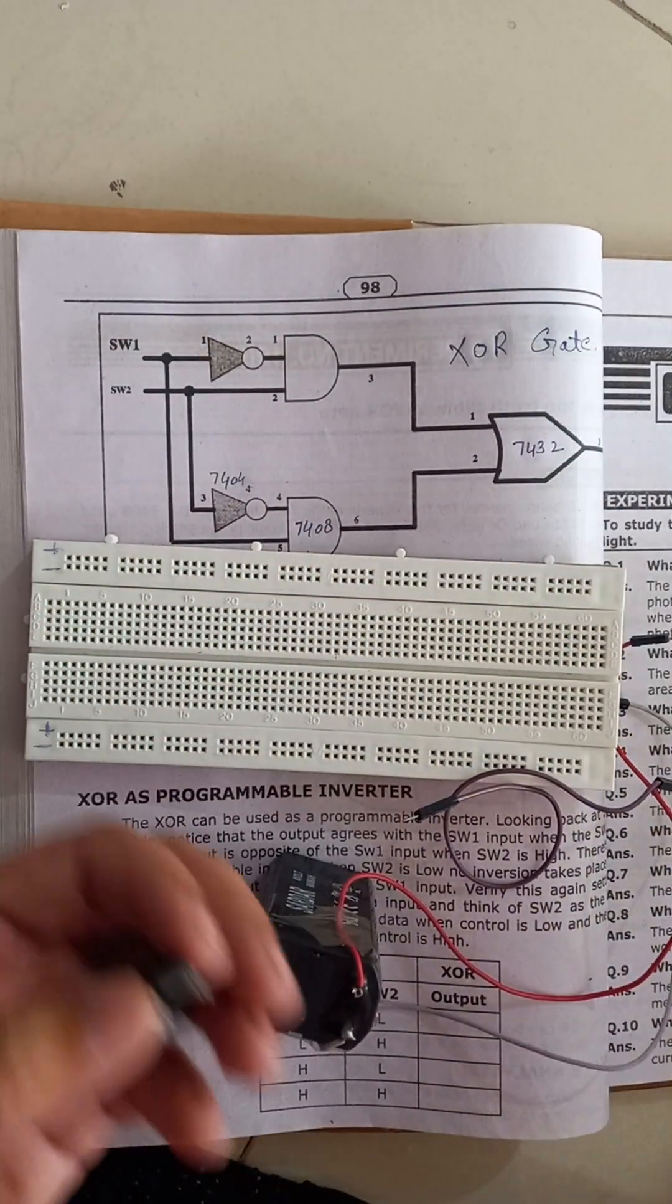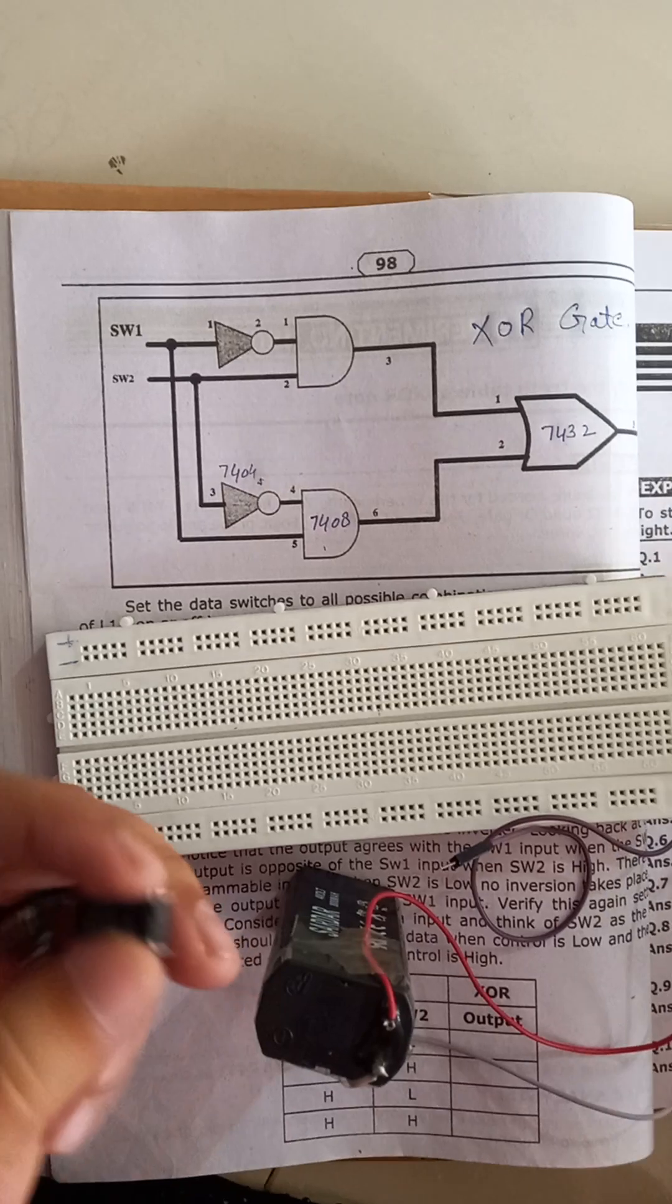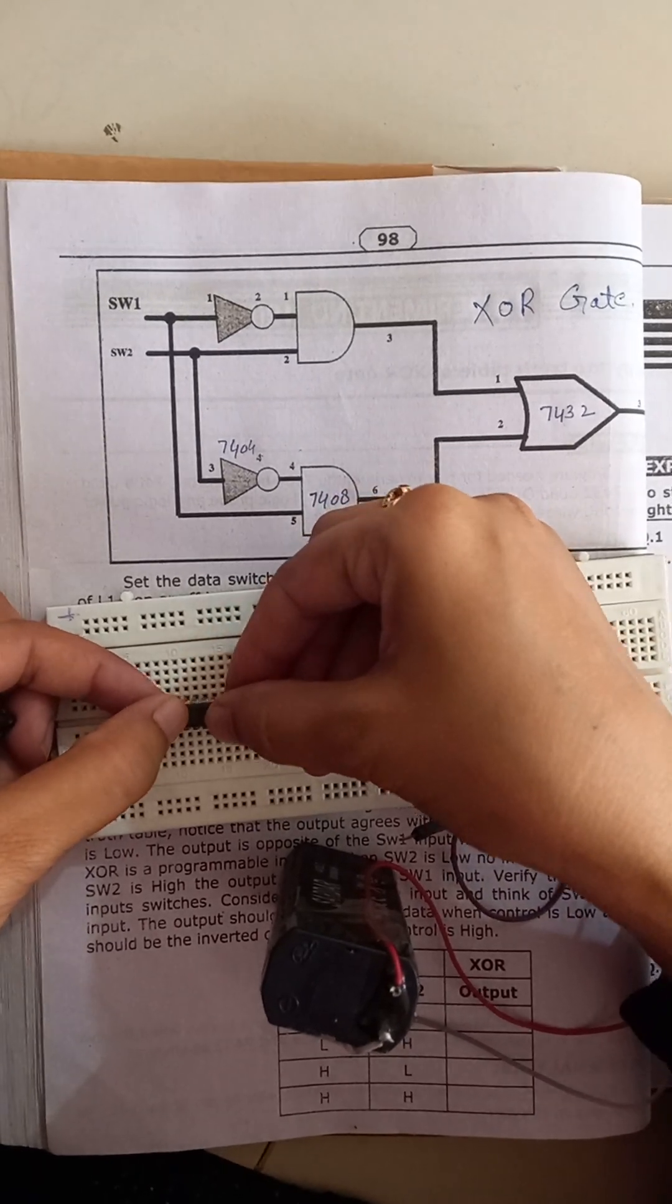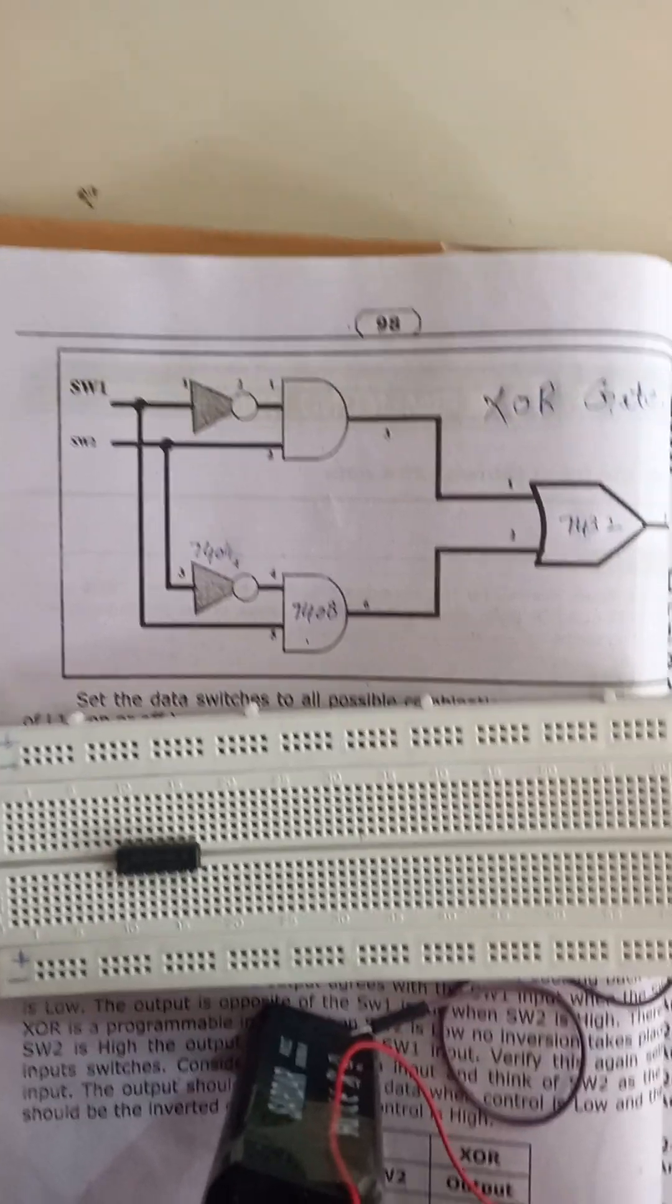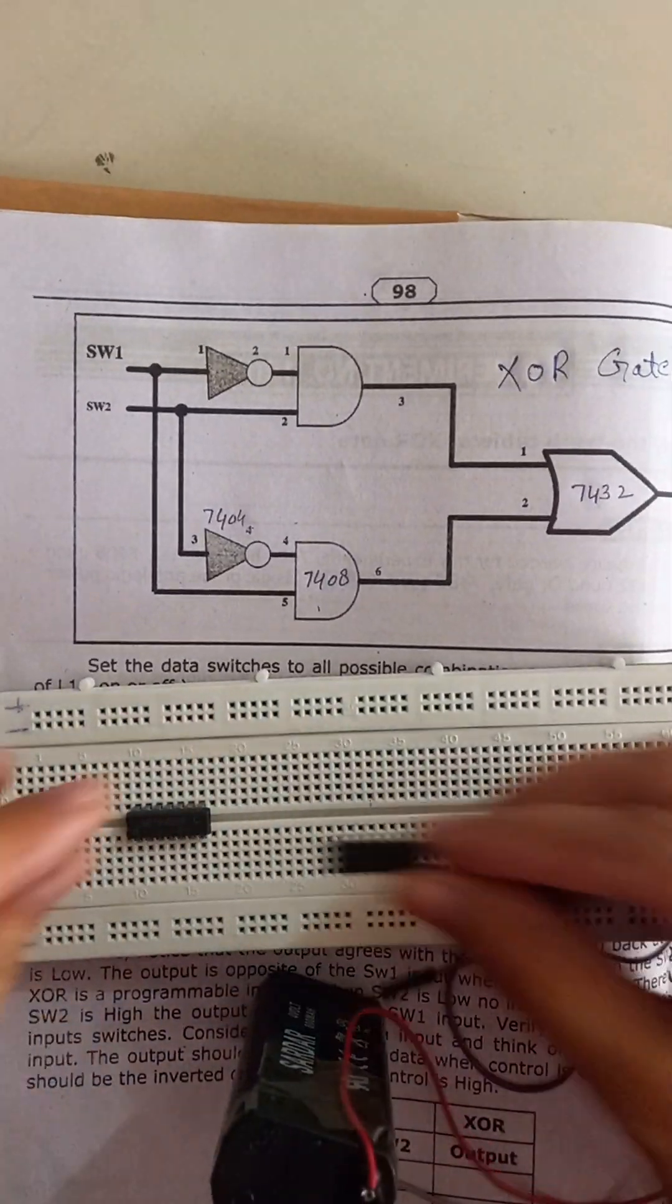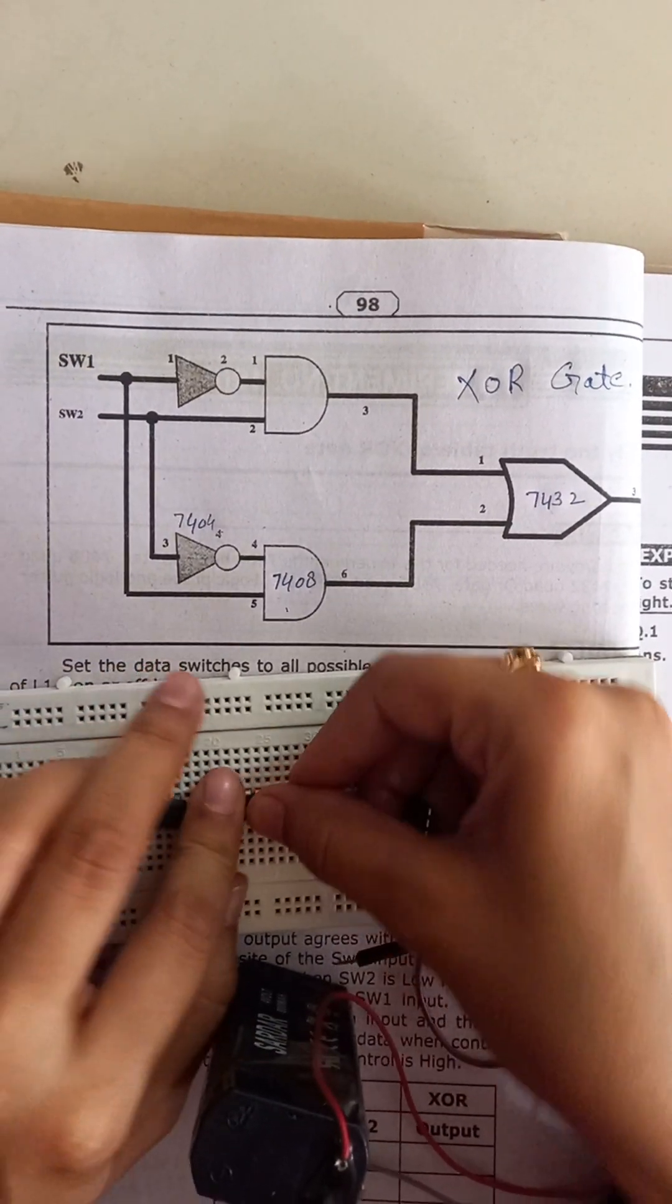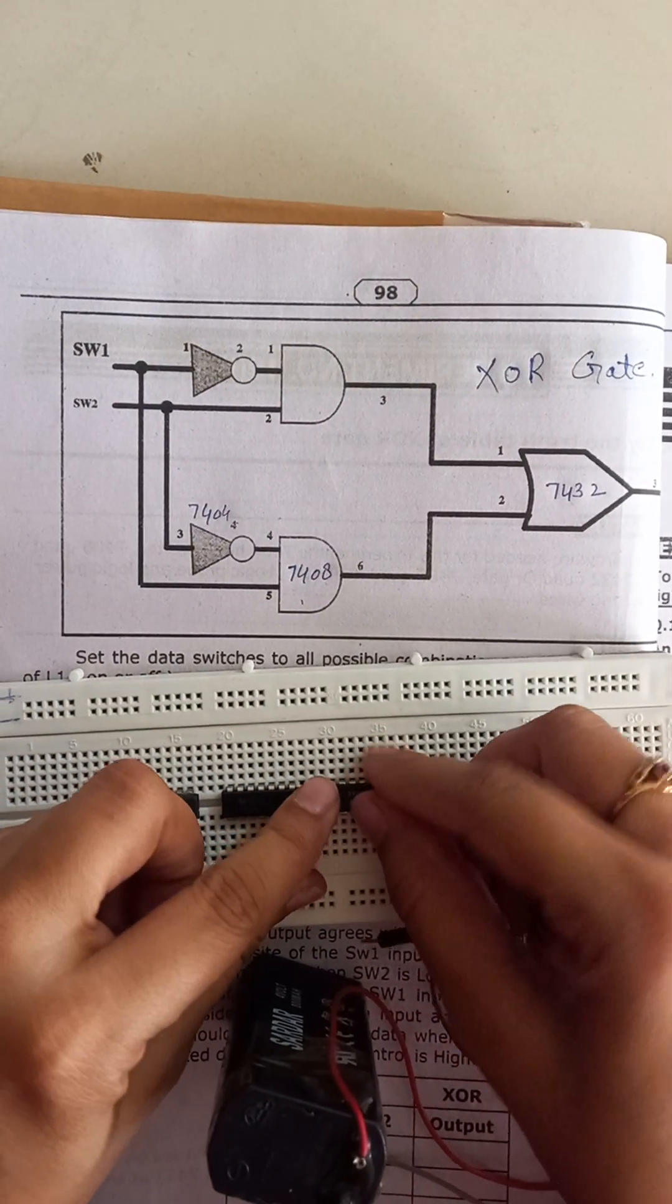Now we start. First we put the NOT gate 7404 on the breadboard, then AND gate 7408, and in the last 7432 OR gate.